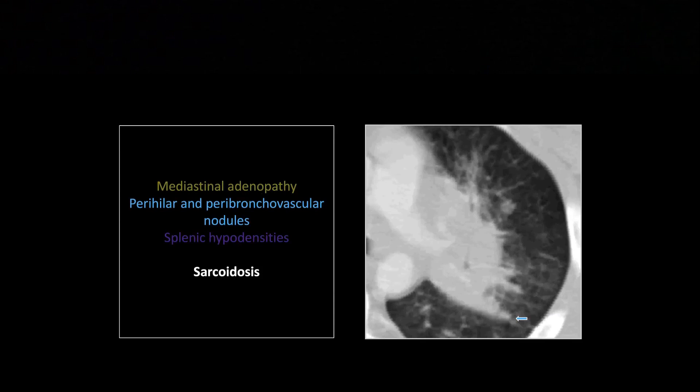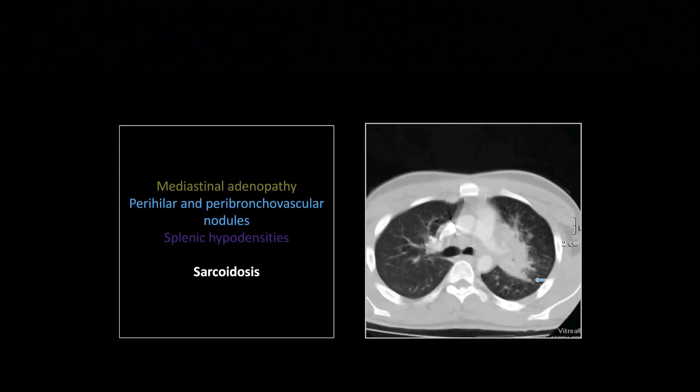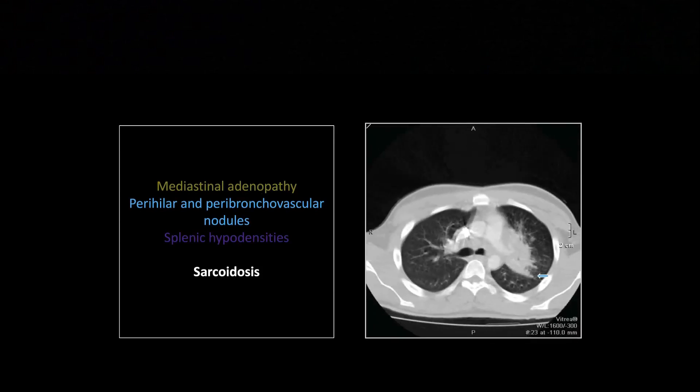When I start thinking, is this sarcoid? I go and try to find subpleural micronodularity, because that will seal the deal. Peribronchovascular involvement is the other classic. If you look to the anterior portion, you can see that density is tracking out along a bronchovascular bundle — that's very helpful and has the same essential significance as subpleural nodularity. So you've got adenopathy and subpleural nodularity: pretty good for sarcoid.